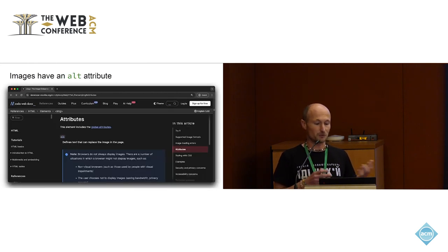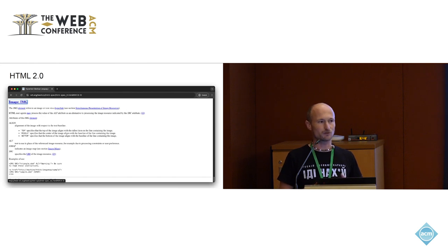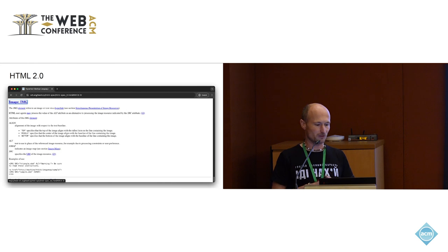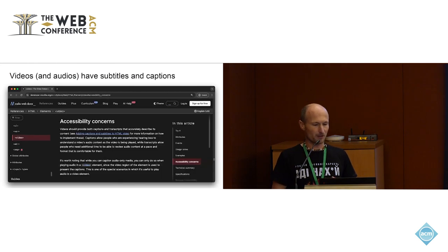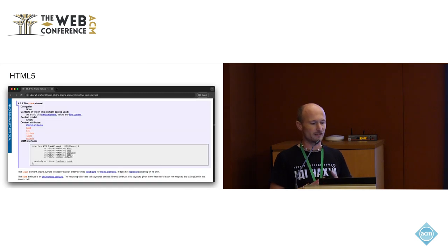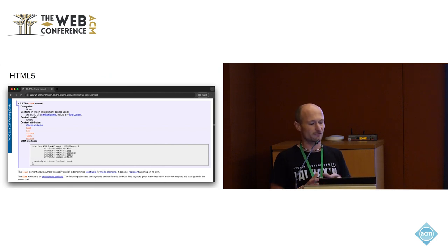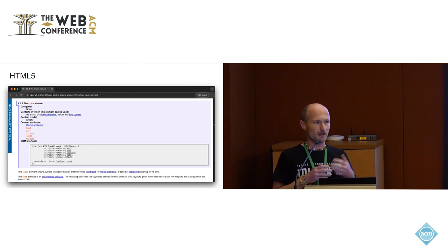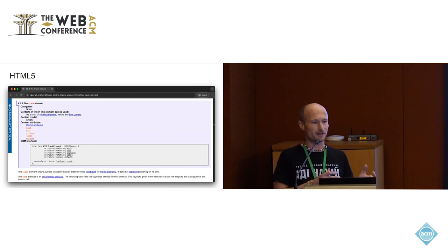Images have had the alt attribute since HTML2, so from the early days they thought about this use case. Another type of opaque content is videos and audio, but they have subtitles and captions — MDN even has an accessibility concerns section for video, and the HTML5 spec mentions the track element for subtitles and audio descriptions. I'm mentioning this because it's not what I'm going to talk about; since we already have alt attributes and the track element, it doesn't make much sense to dive deeper into those.